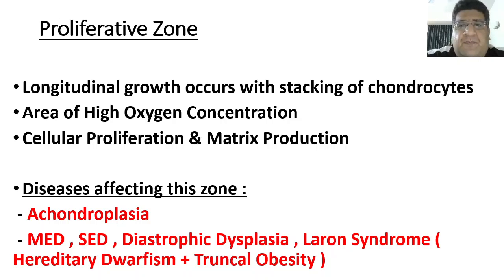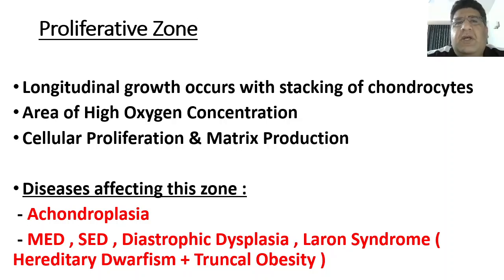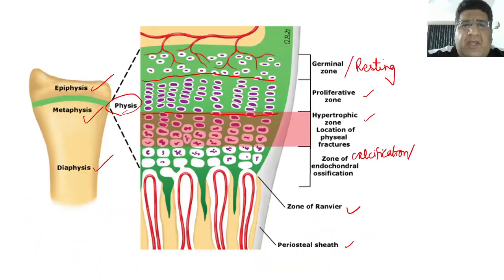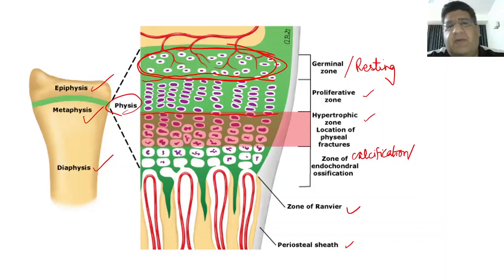If anything happens to the proliferative zone, that is most often going to give rise to dwarfism — the most common cause being achondroplasia. All disorders of height, whether achondroplasia, MED, spondyloepiphyseal dysplasia, metaphyseal dysplasia, diastrophic dysplasia, or Laron syndrome (hereditary dwarfism plus truncal obesity) — all these disorders affect the proliferative zone.